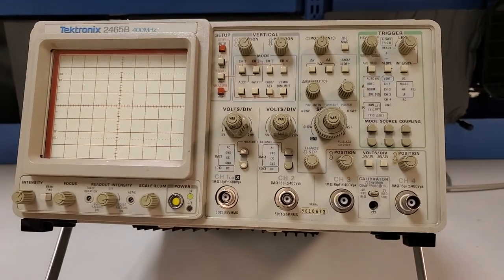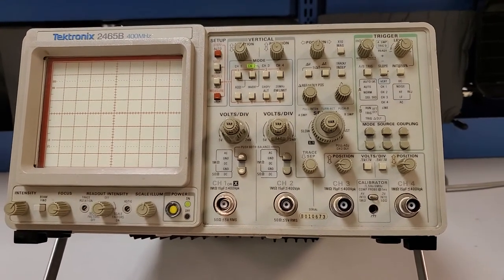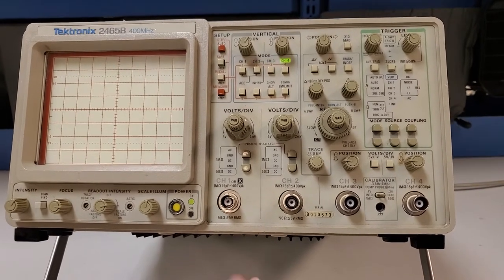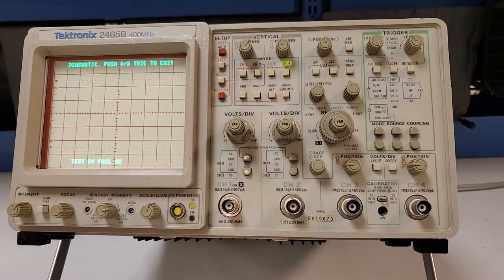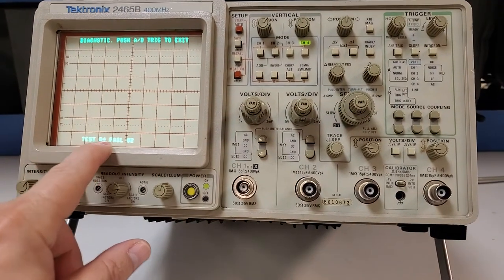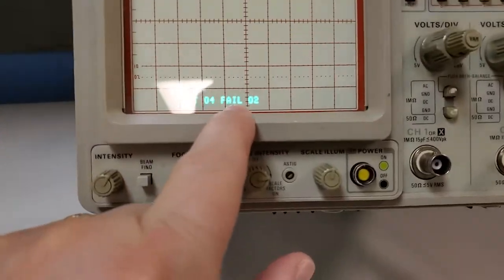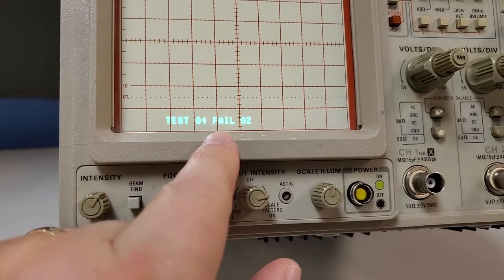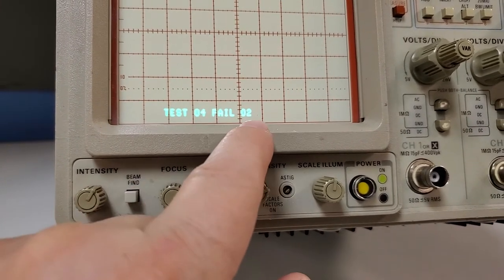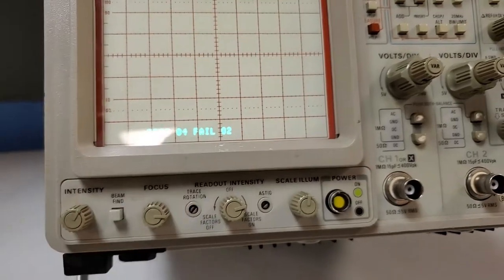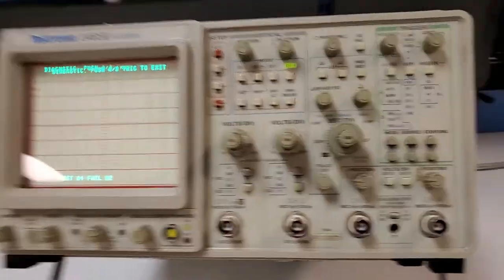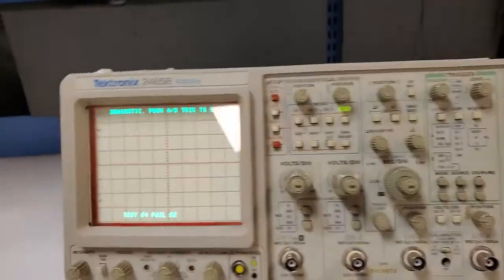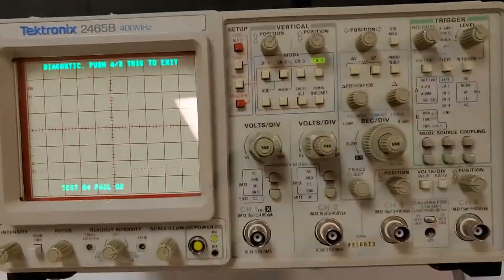Sorry for the noise in the background, I'm actually at work. Okay, so here we go. You'll notice that it's test zero fail, which means the cal constants are out and it needs to be calibrated. I have to film at this angle otherwise you end up with the lights right in the middle there.